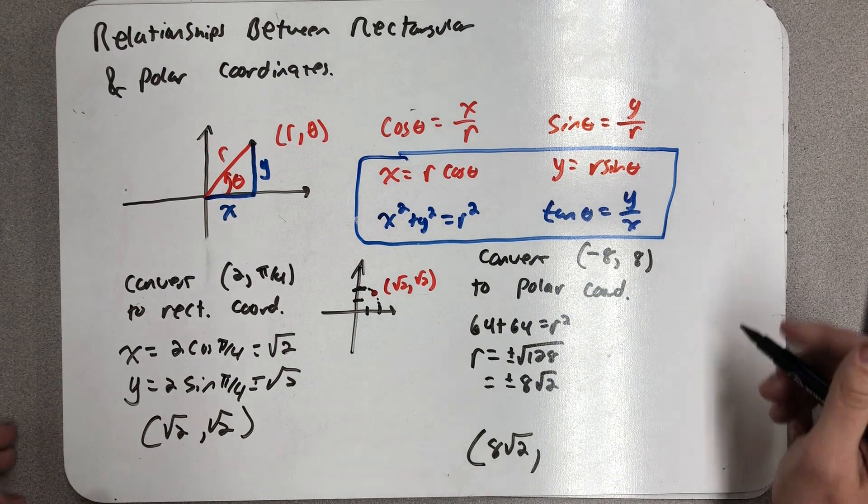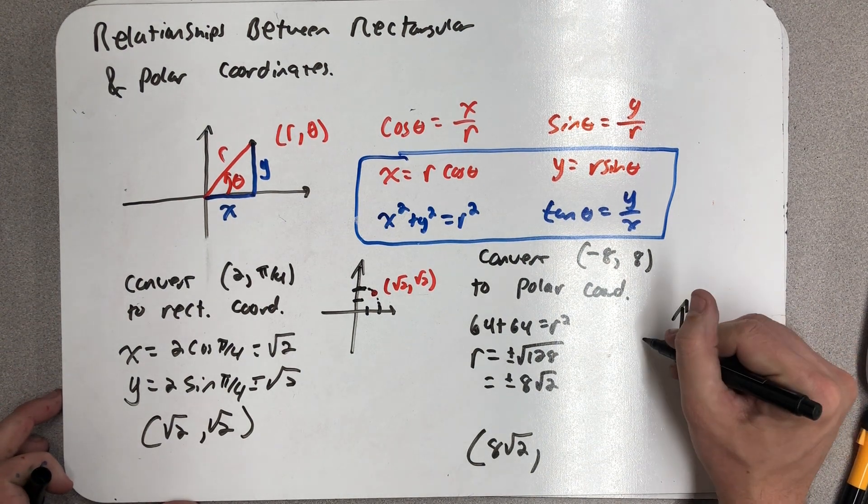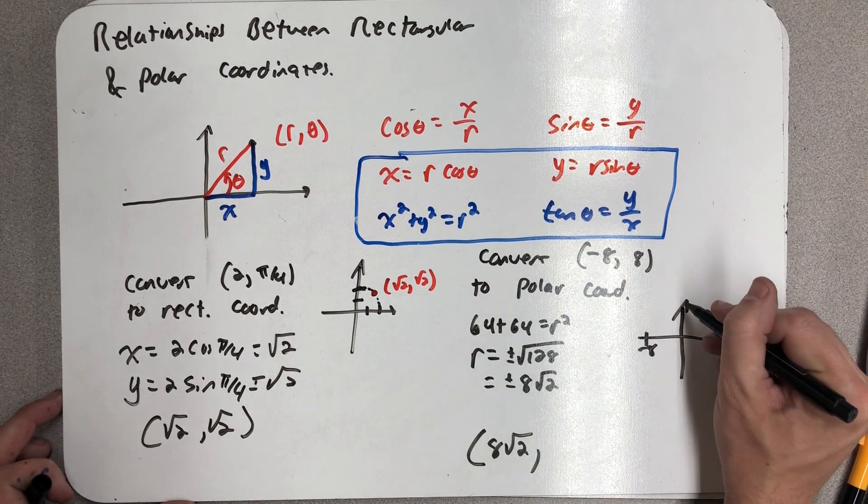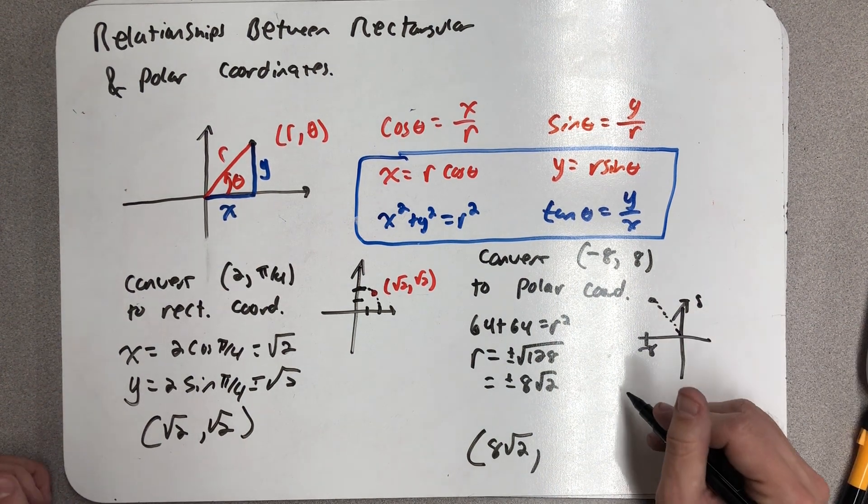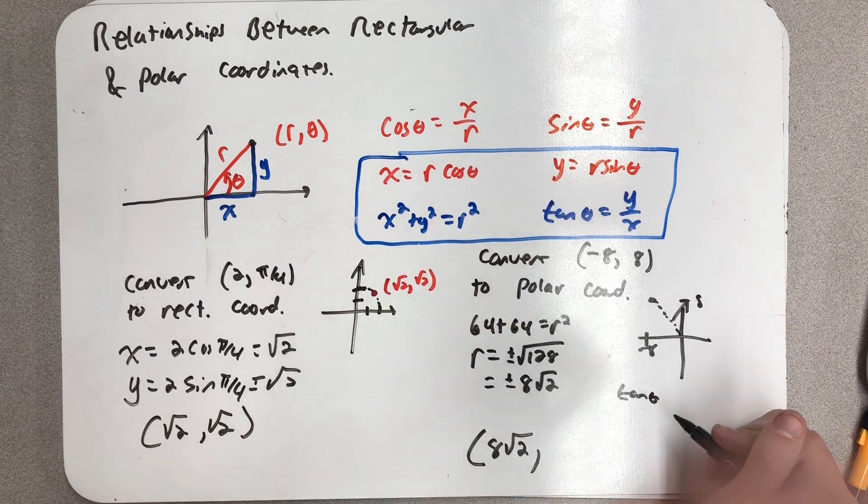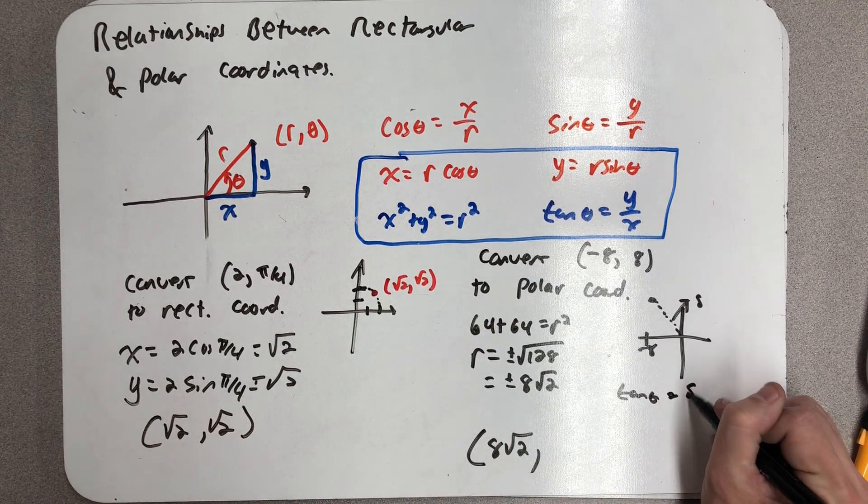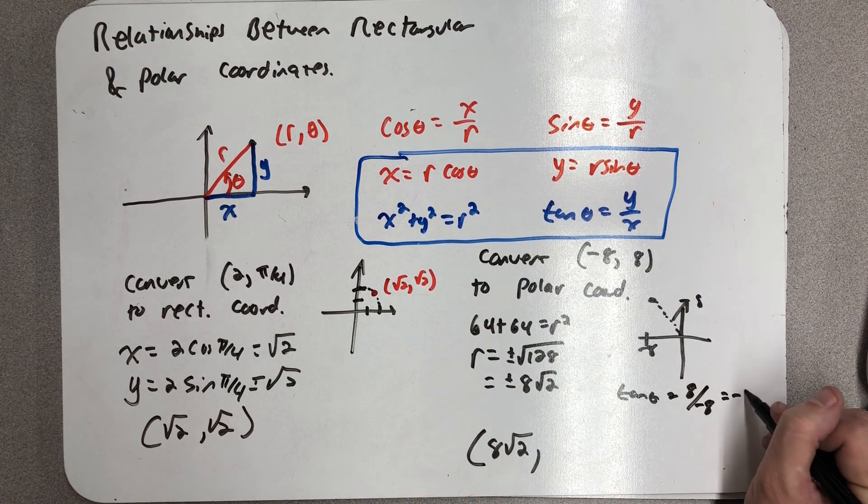Now I need to find an angle. Well, if I plot this point, (-8, 8), I think I know what angle that is. That's 3π/4, but let's leverage this just so I can say that we did. 8 over -8 is -1.